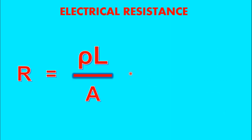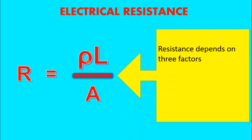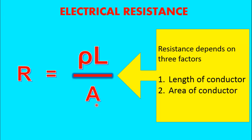Now let's talk about the factors on which electrical resistance depends. The expression shows R = ρL/A, where L is the length of the conductor — the wires or cables through which electrical current passes — A is the cross-sectional area of the same conductor, and ρ (rho) is the resistivity, which is a property of the material. I will discuss the effect of resistivity on resistance later in this video.